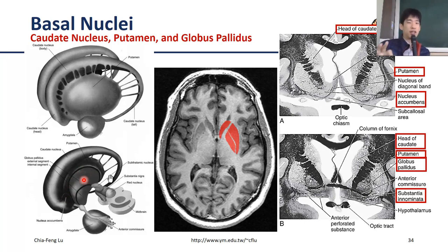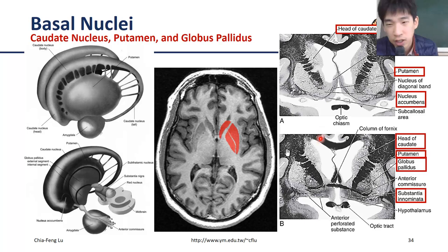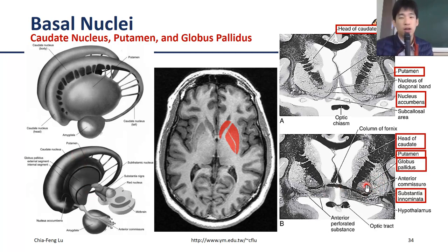At least these three structures — caudate nucleus, putamen, and globus pallidus — should be identifiable from actual imaging, 3D views, or coronal slices. On the coronal slice you can see the head of the caudate and the putamen clearly. To see the globus pallidus on a coronal slice, you need to cut at specific levels, where you will see the putamen and the globus pallidus adjacent to it.